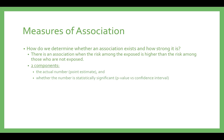When evaluating a relative risk or an odds ratio, we are really trying to determine whether an association exists and how strong it is. When we talk about an association, think of it as a relationship between exposure and outcome, as we've discussed earlier this semester. There is an association when the risk among the exposed is higher than the risk among those who are not exposed.